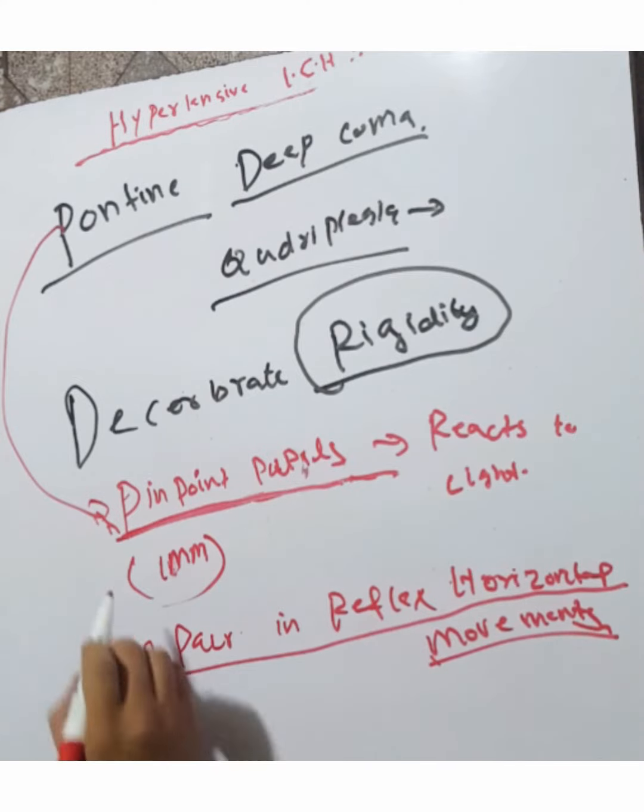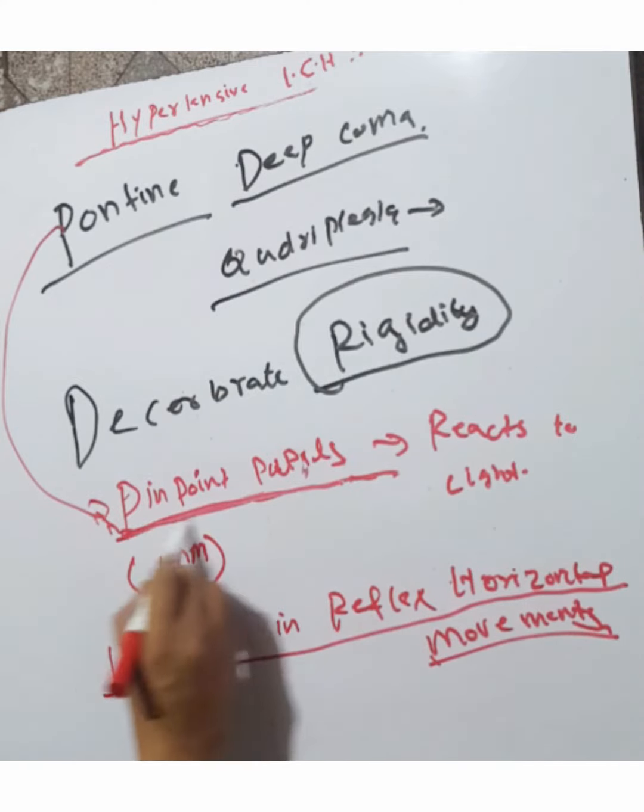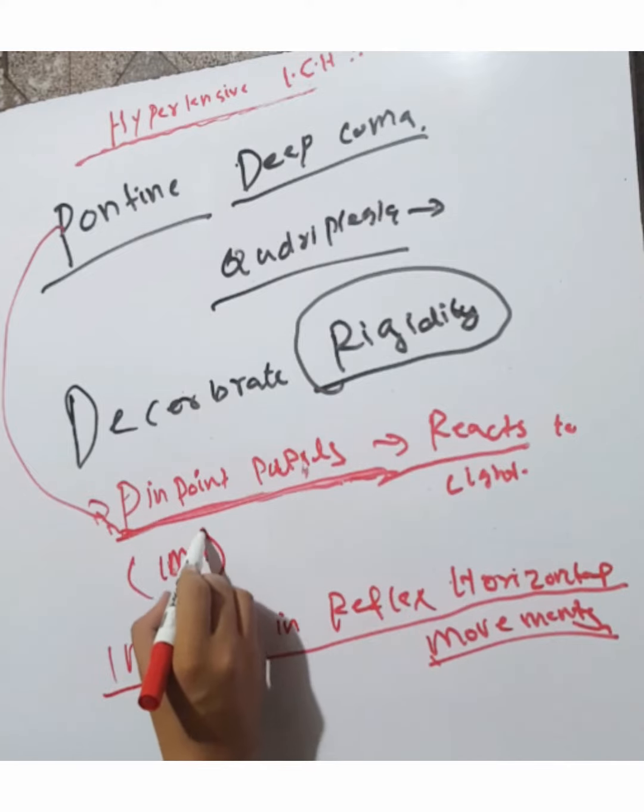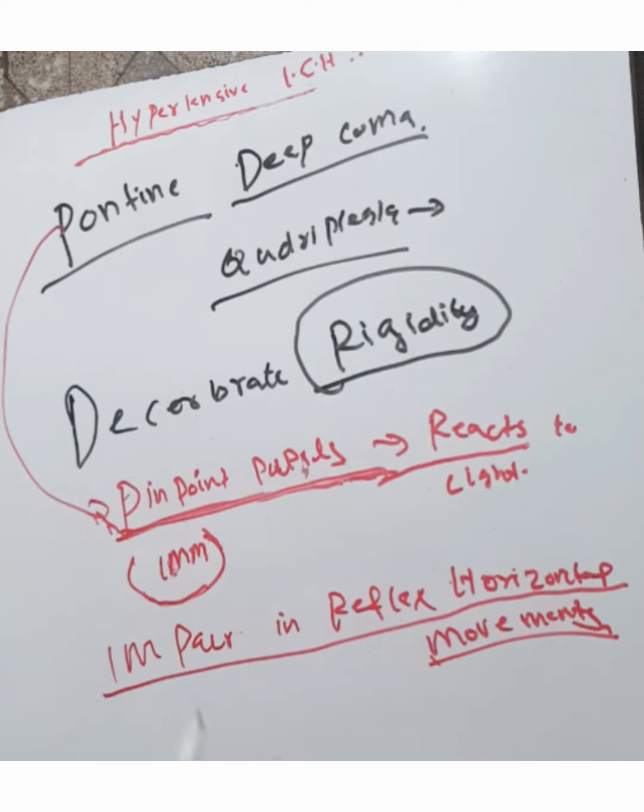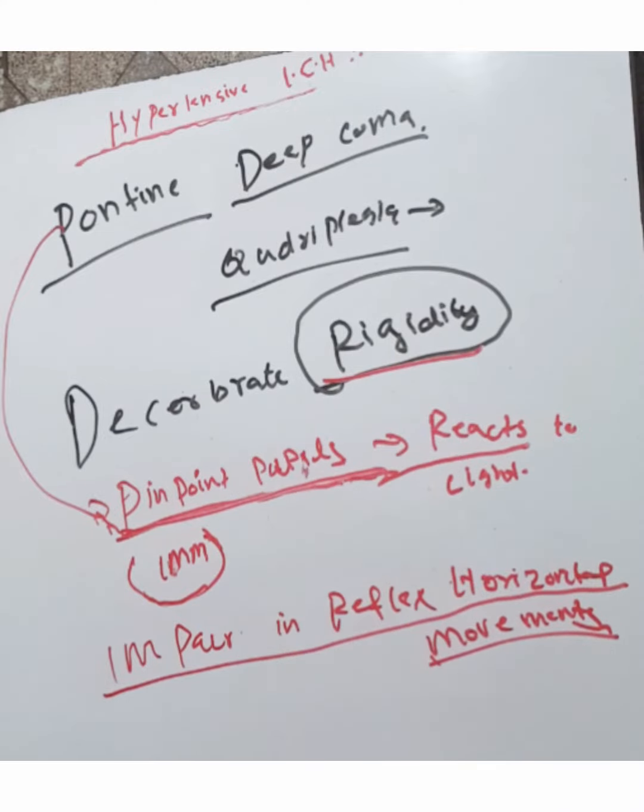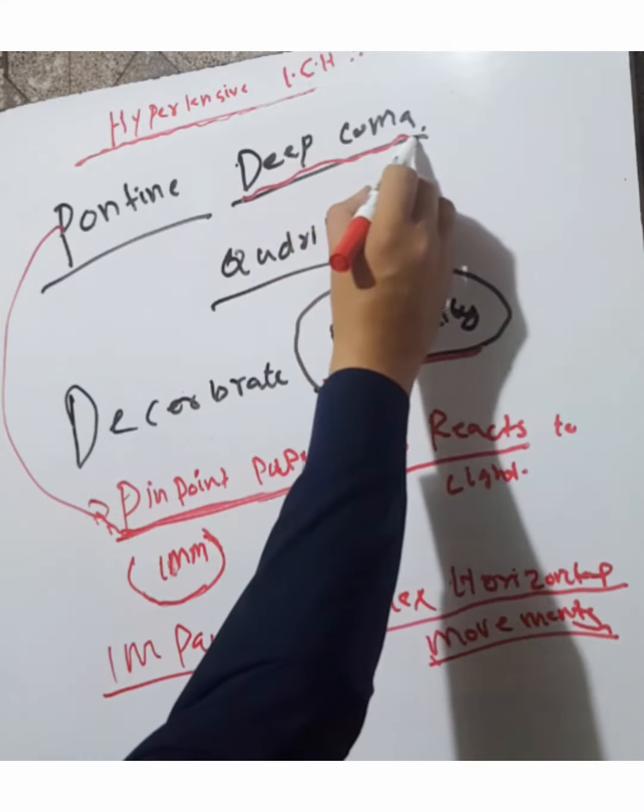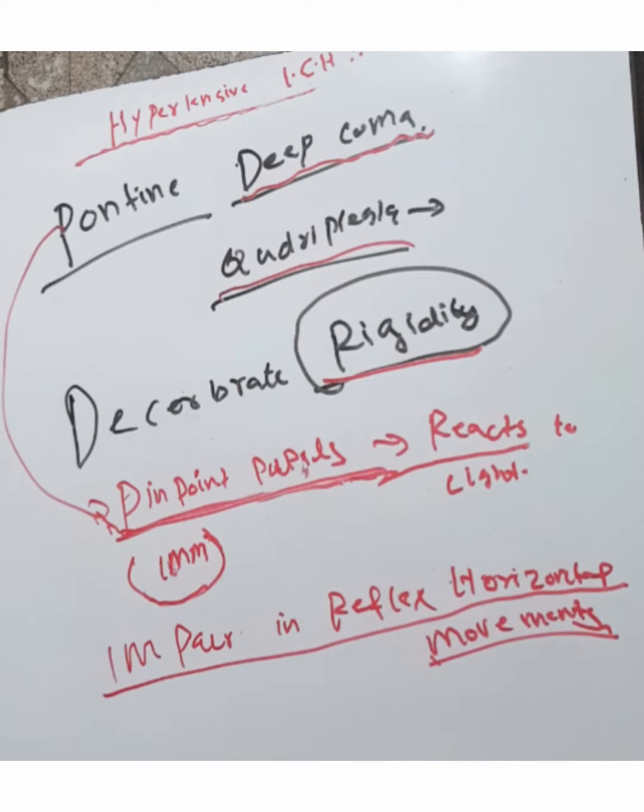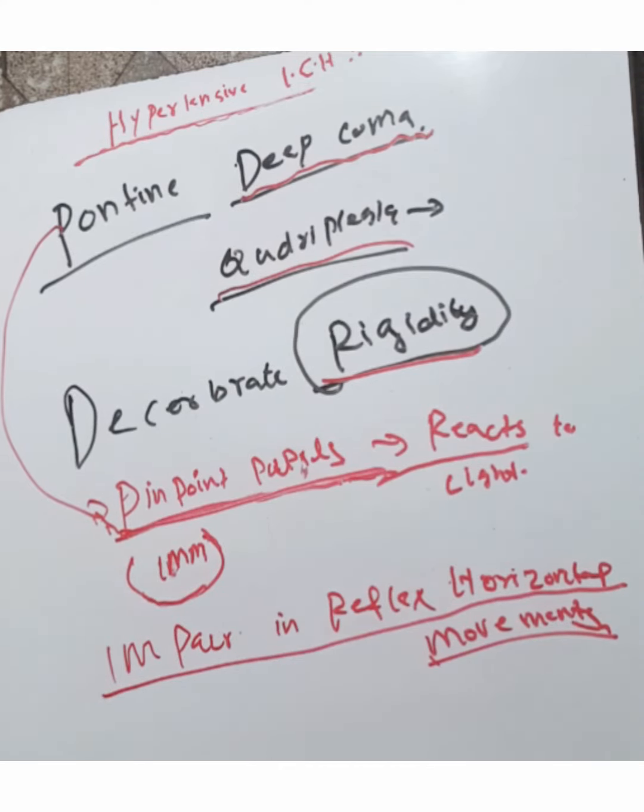The most common sign is pinpoint pupils that react to light, 1mm in diameter. Decerebrate rigidity, deep coma, quadriplegia, and pinpoint pupils are the clinical features of Pontine Intracerebral Hemorrhage.